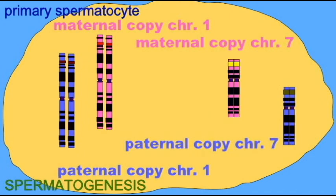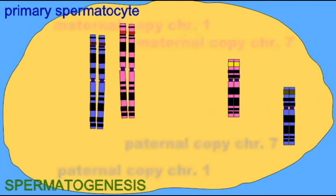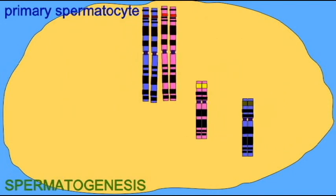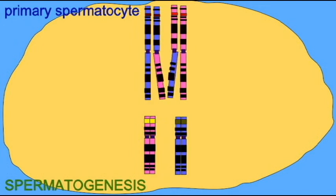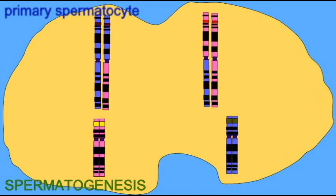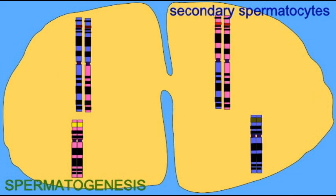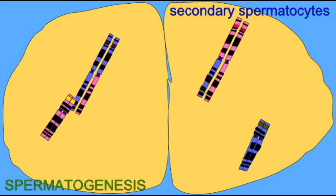In males, meiosis only occurs in the testes to produce sperm, and thus the process is called spermatogenesis. In prophase I of spermatogenesis, independent assortment and crossing over occur to allow great diversity in the gametes which can be produced.